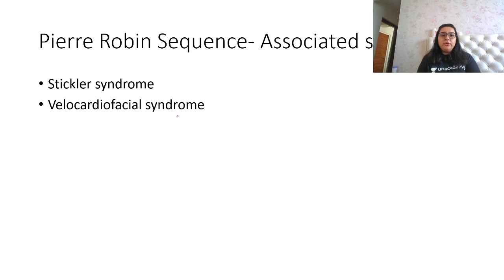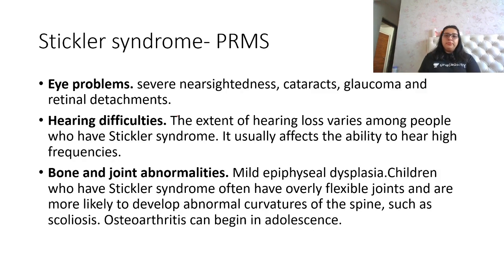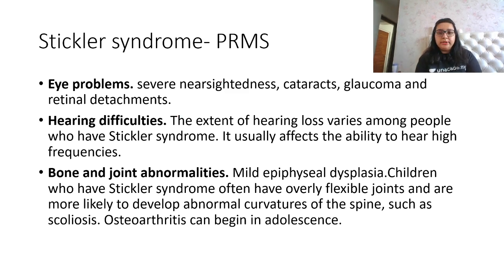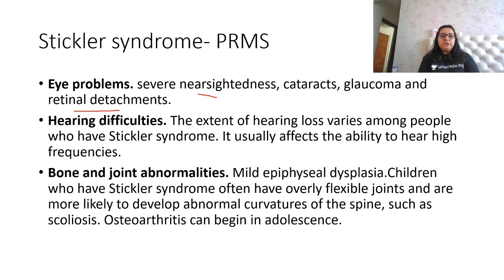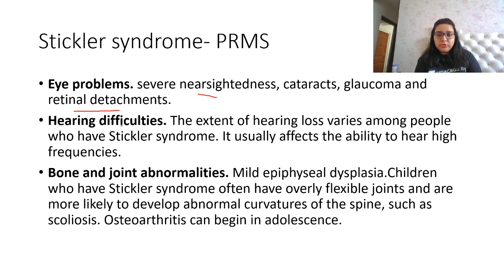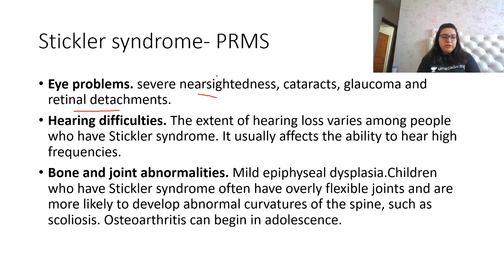Stickler syndrome is a type of Pierre Robin sequence. The key eye problems include severe nearsightedness, cataracts, glaucoma, and retinal detachment — remember these as typical for Stickler syndrome. Hearing difficulties are also present, typically affecting the ability to hear high frequencies. Bone and joint abnormalities include mild epiphyseal dysplasia, over-flexible joints, scoliosis, and osteoarthritis that can begin in adolescence.